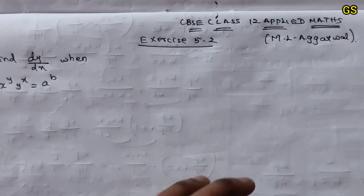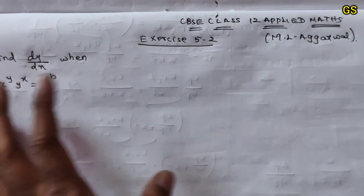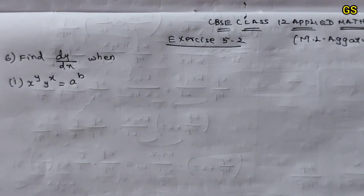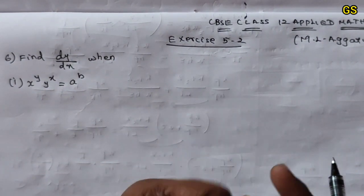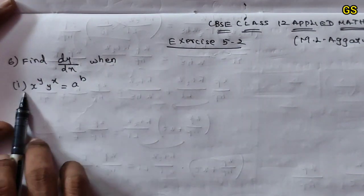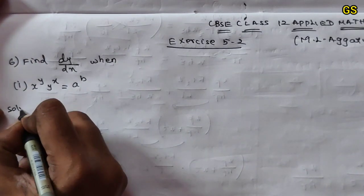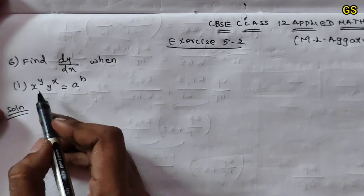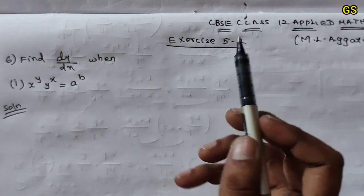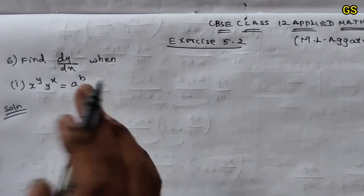Hi friends, welcome to CBC class 12 applied math. This is the textbook solution for exercise 5.2, 6th problem. Please support and subscribe to our channel. We need to find dy/dx. This is the 3rd subdivision, and we start with the first subdivision: x power y times y power x. As mentioned in the introduction video, this involves power variables.